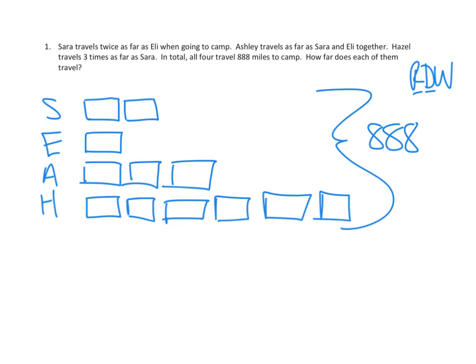If these are twelve boxes of the same size, and together all of them add up to 888, then I think we're saying that if we divided up those 888 miles into twelve equal parts, we would know what each of these little individual parts was, and then we'd be able to figure out the totals. So let's go ahead and see if we can do that. I'm going to shrink this a little bit so I can do my long division.